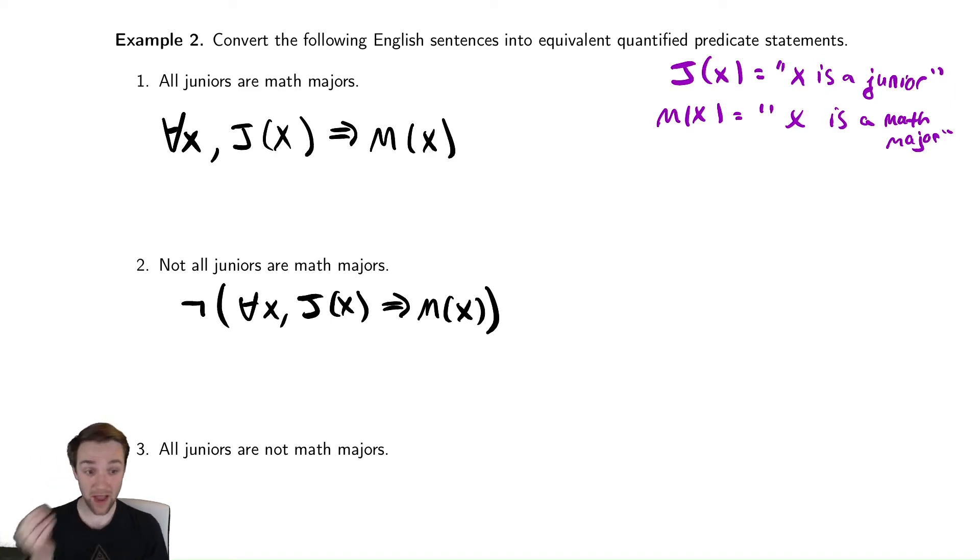If I want to say not all juniors are math majors, you could actually say that that statement in an easier way by saying there's at least some junior that is not a math major. So there exists an x where x is a junior and not a math major.